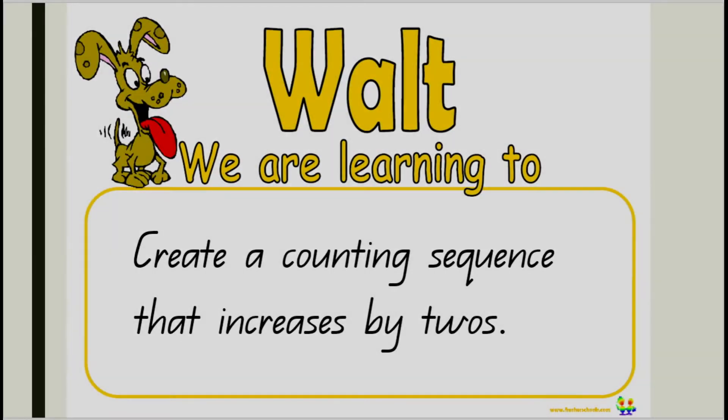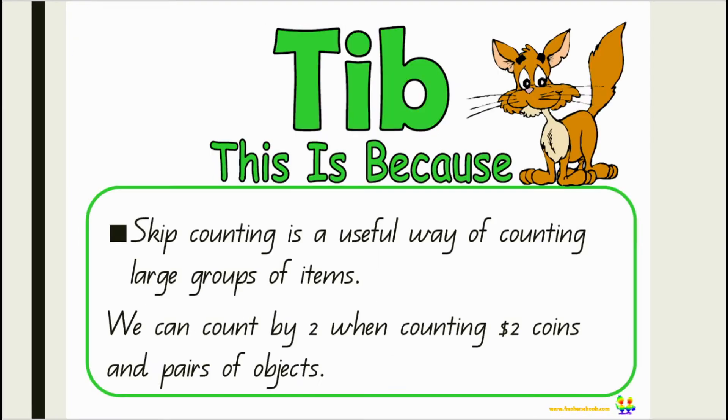Today we are learning to create a counting sequence that increases by twos. This is because skip counting is a useful way of counting large groups of items. We can count by two when counting two dollar coins and pairs of objects.